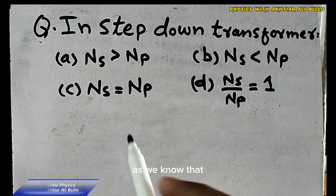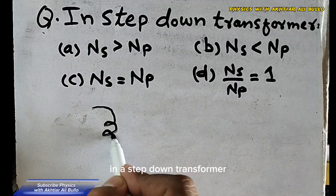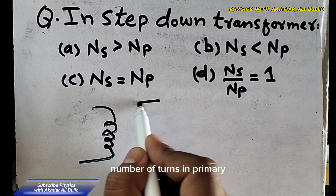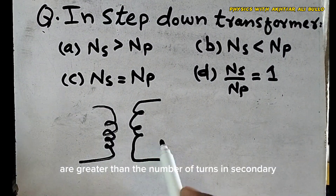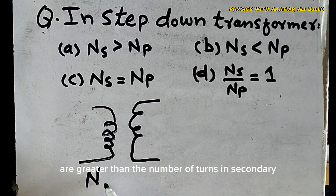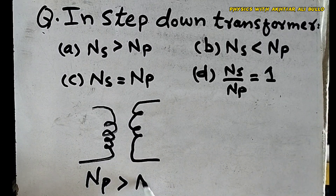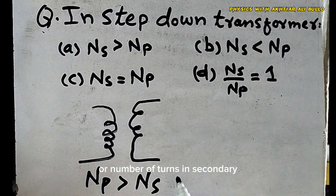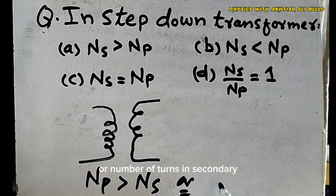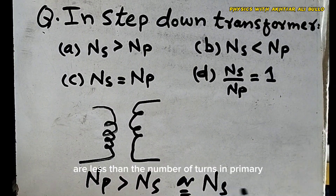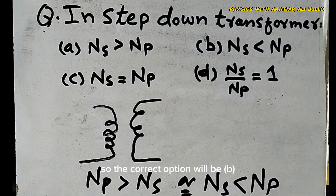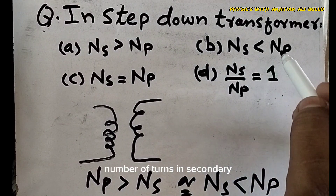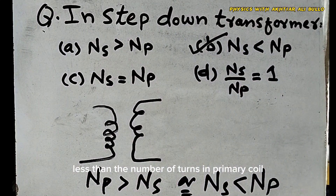As we know that in step-down transformers, the number of turns in primary are greater than the number of turns in secondary. So the number of turns in secondary are less than the number of turns in primary. Therefore, the correct option will be B: number of turns in secondary less than the number of turns in primary coil.